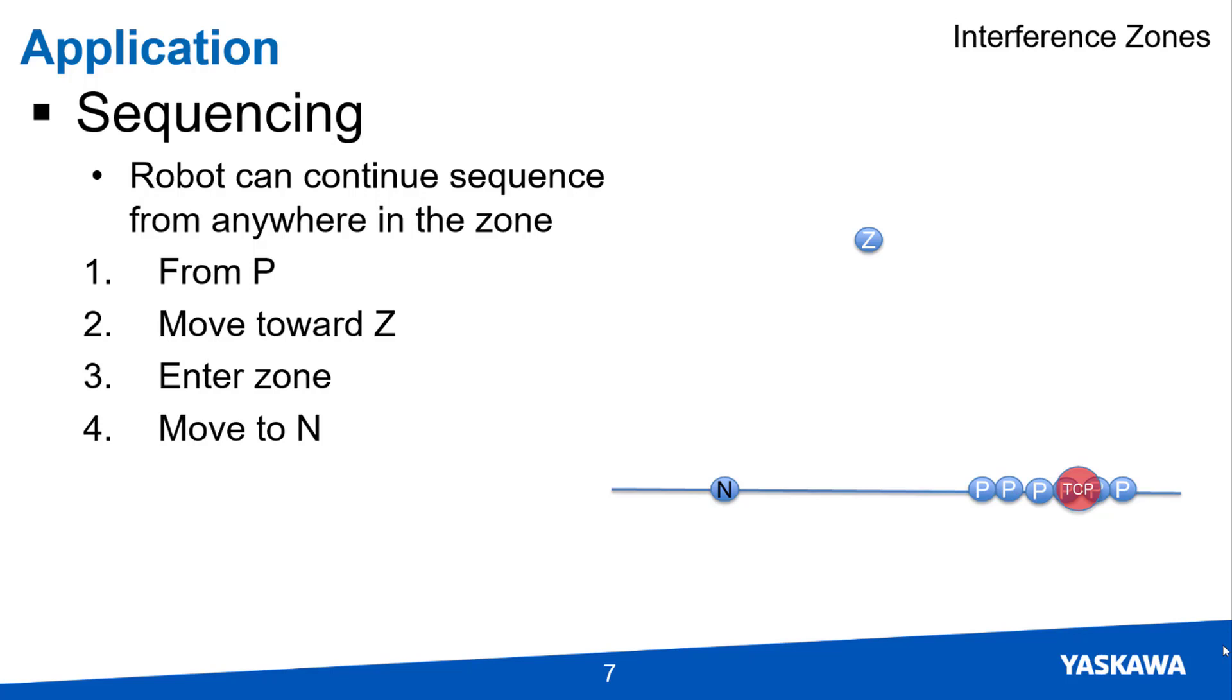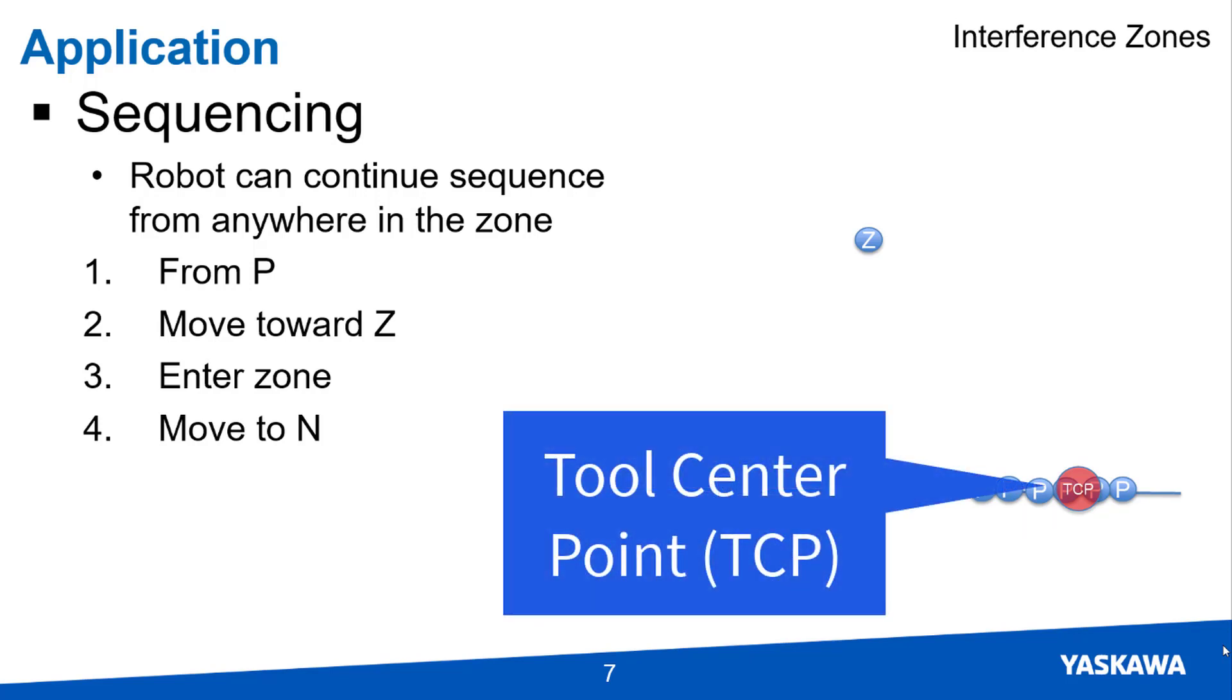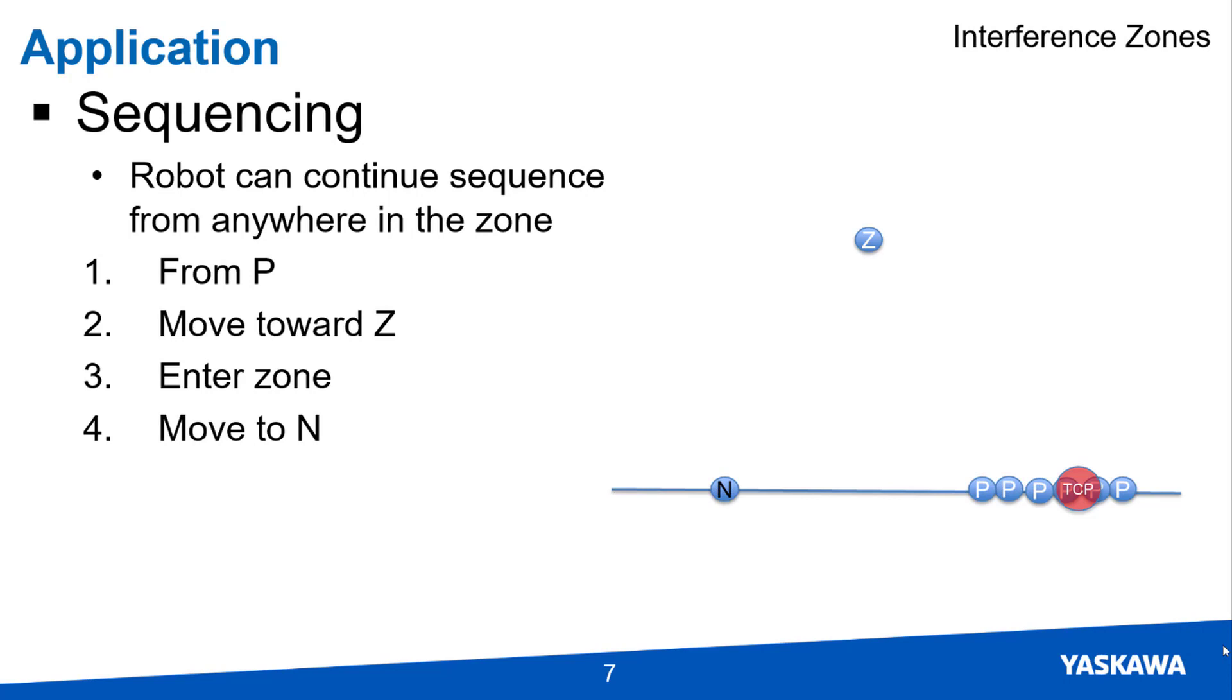In this illustration, the TCP may be at any of the points P and move toward the point Z. If point Z is within an interference zone, the program sequence can direct the TCP to point N, using a more efficient path.